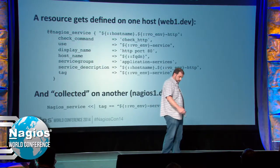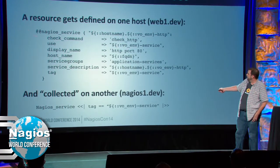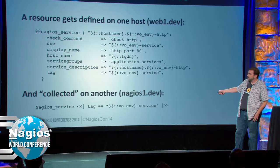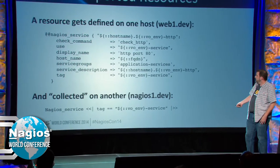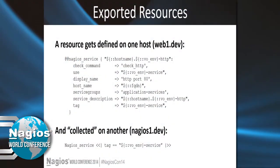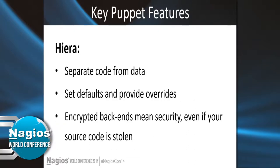Here's what an exported resource looks like. On the host generating the resource, you see the double-at sign in front of the resource declaration — say we define a Nagios service for an HTTP check. The client instantiates that service and stores it to PuppetDB but doesn't do anything else. On the Nagios server, when it does its Puppet run, it says: I want to instantiate any Nagios services exported with the tag I'm looking for, and it creates them on itself. We'll see more about that in a bit.